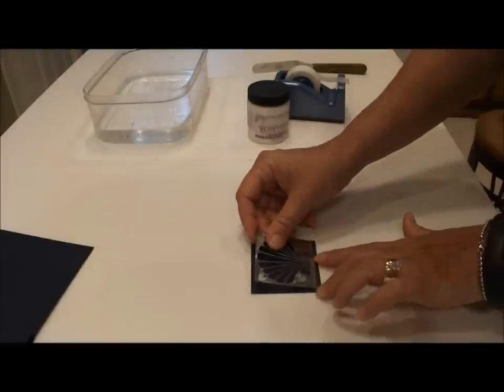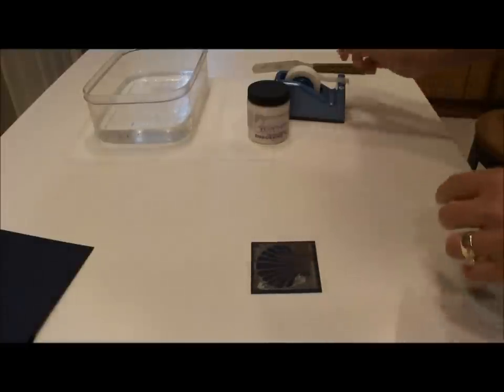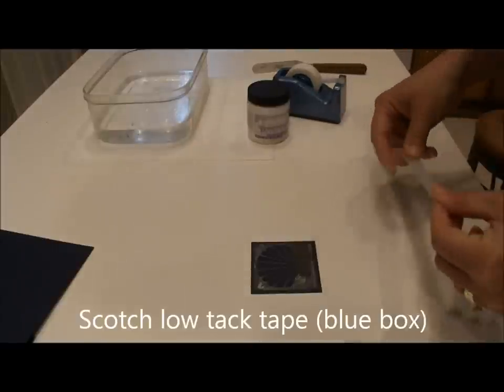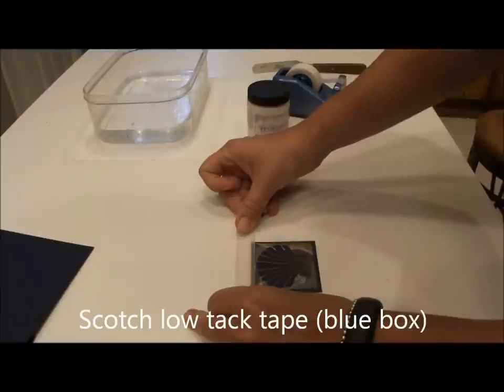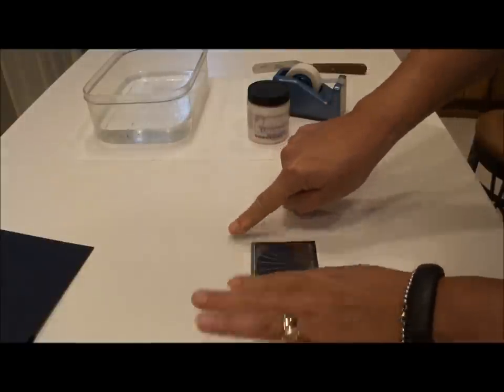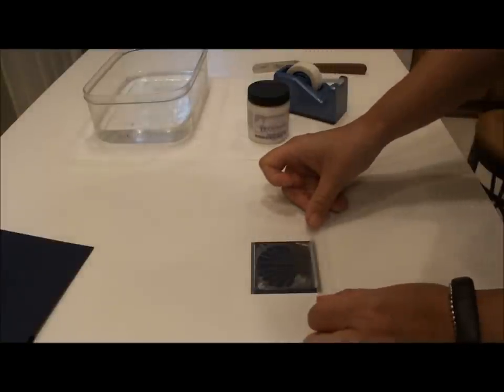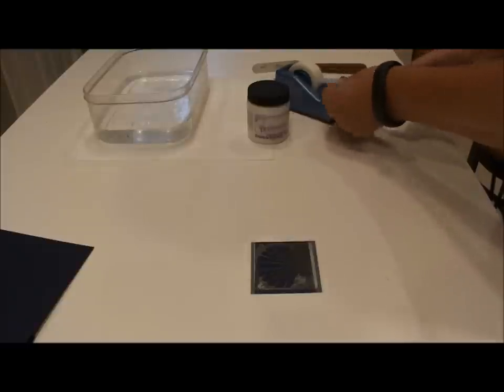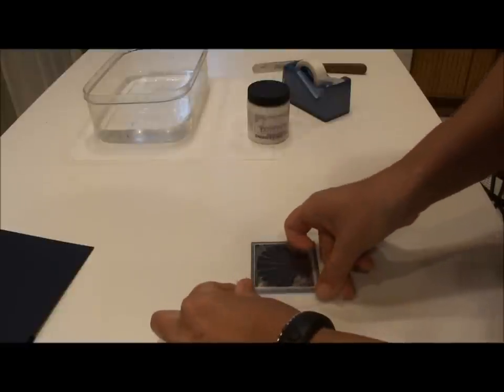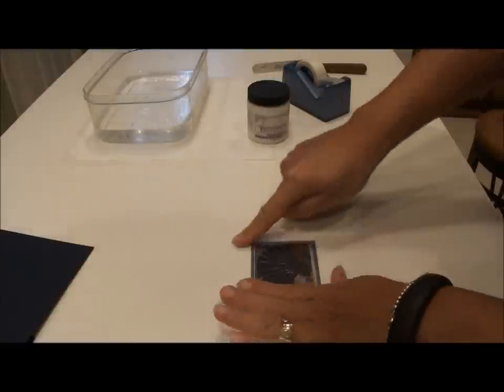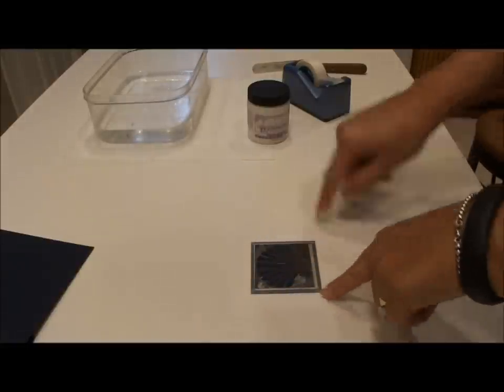So I center the stencil on the two and a half by two and a half square and I'm using low tack tape. The very first piece I put on is the top piece because that will act like a hinge when we go to remove the stencil. So the top first, then the bottom, and then each side. Careful not to cover the design but you want to completely cover the edges of the paper that the stencil's on.